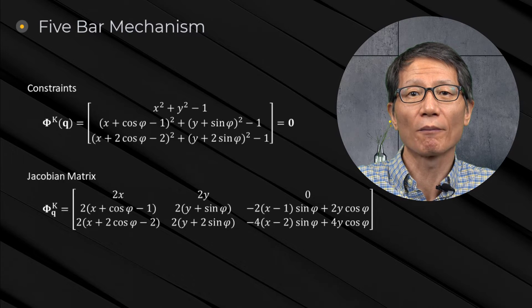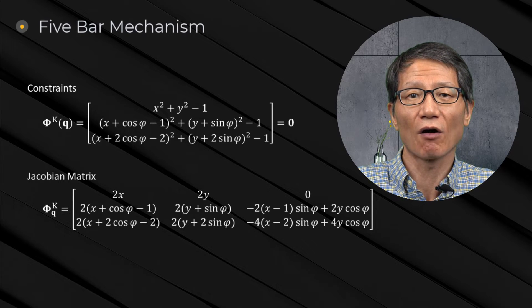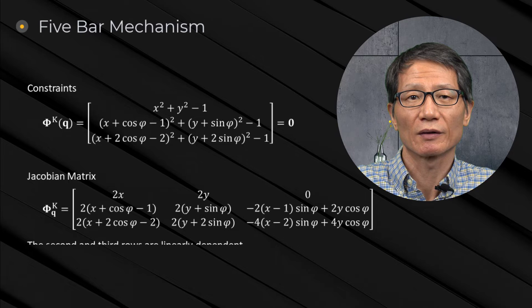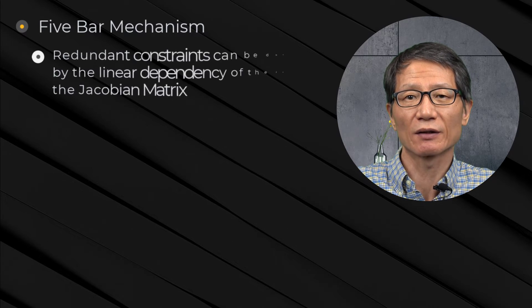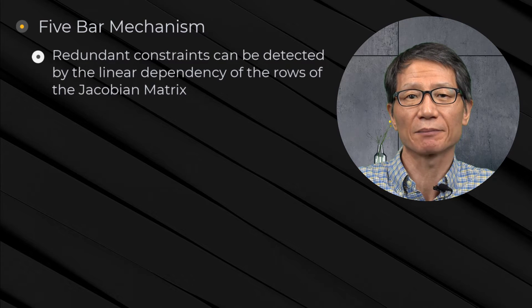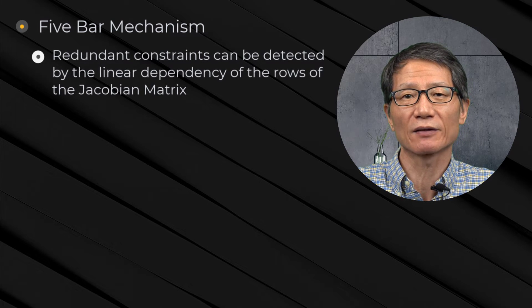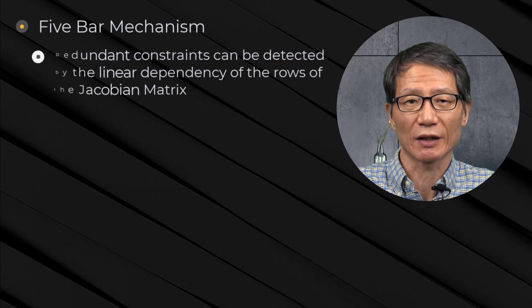If you do this row operation, the resulting row becomes zero. This shows that the rows are linearly dependent. Therefore, the redundant constraints can be detected by checking the linear dependency of the rows of a Jacobian matrix.